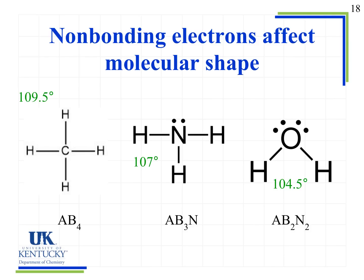With water, we still have four groups around the central atom — tetrahedral geometry overall. We have central atom A, two bonding groups, and two non-bonding lone pairs on the oxygen (AB2N2). Those two lone pairs compress the angle even more than in NH3, giving an HOH angle of 104.5 degrees. The more lone pairs present, the smaller the angle becomes compared to the ideal.